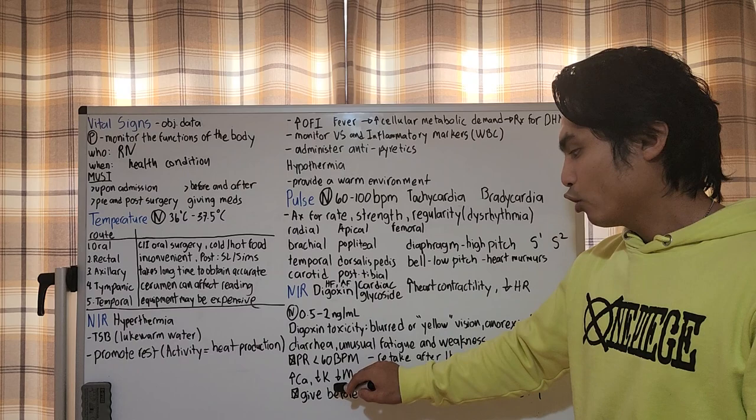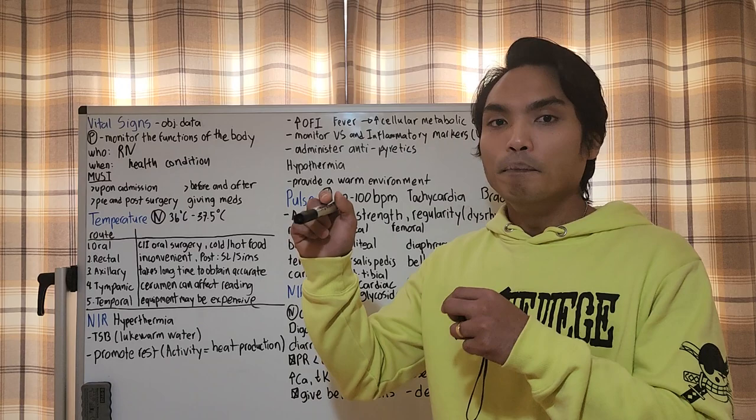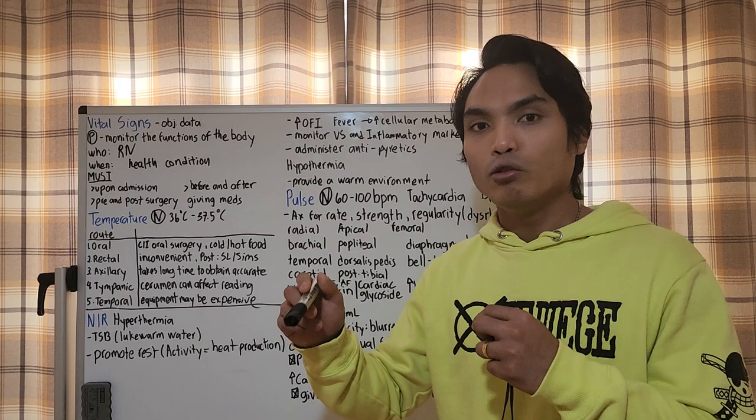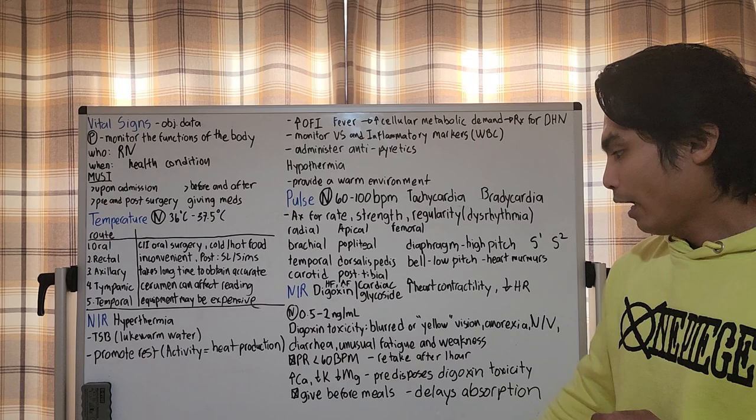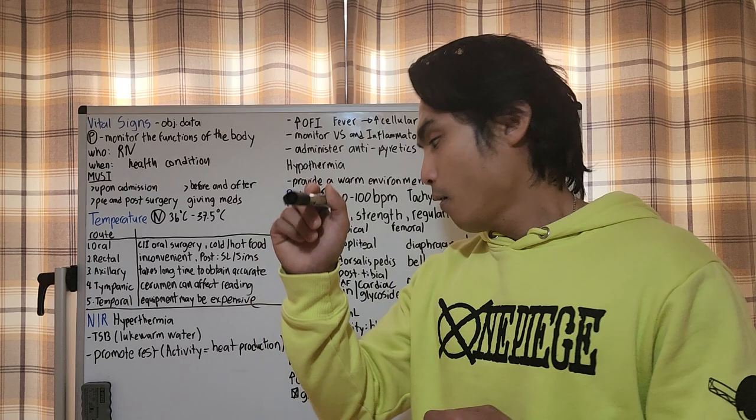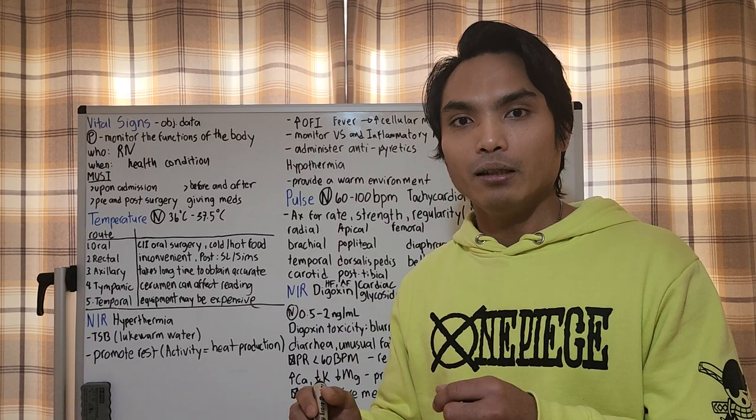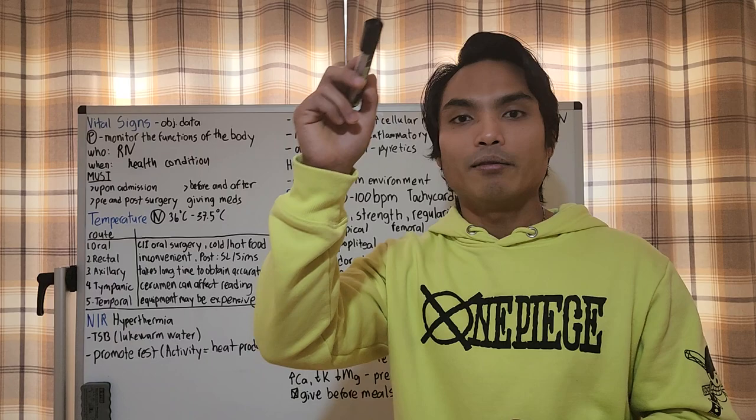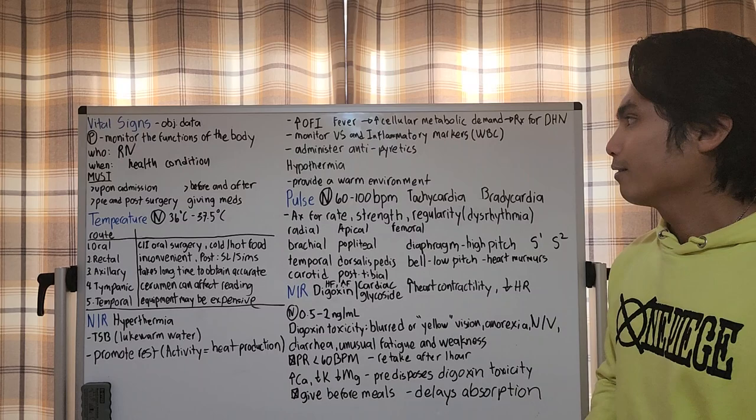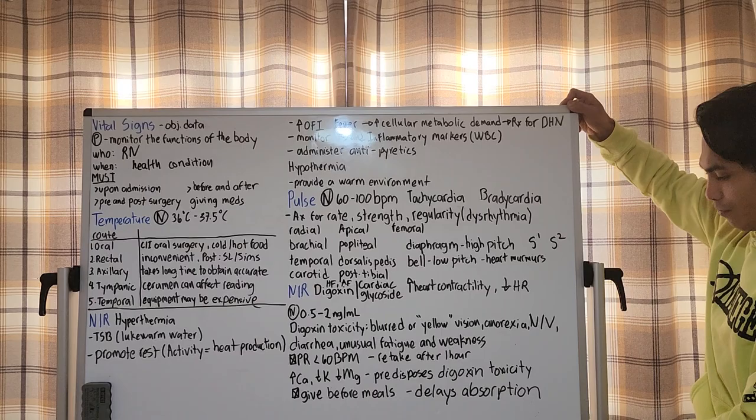Monitor electrolyte levels because increased calcium, decreased potassium, and decreased magnesium predispose to digoxin toxicity. Before starting the patient on digoxin therapy, we need to monitor electrolyte levels first. As much as possible, do not give digoxin with food because it will delay absorption. If possible, it should be 2 hours before and after food.